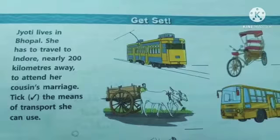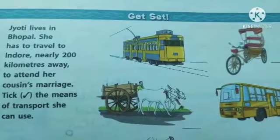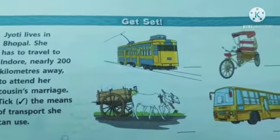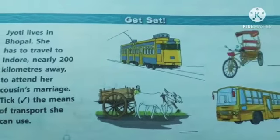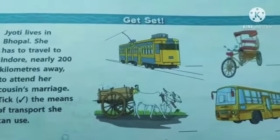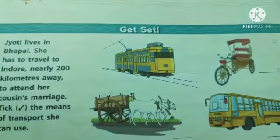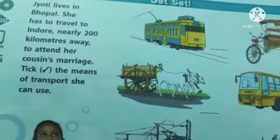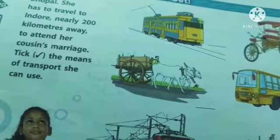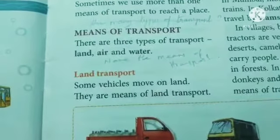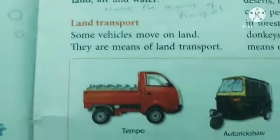For example, we don't use flights very often — only when we have plenty of money or in an emergency. Trains and buses also take a lot of time. So it depends on how people choose their means of transport. There are three types of transport: land, air, and water.